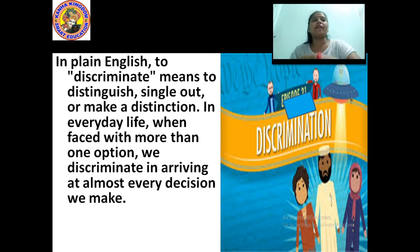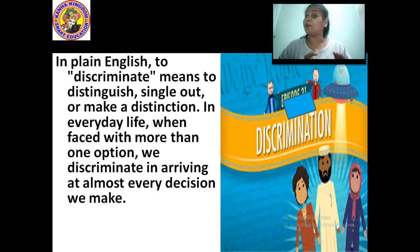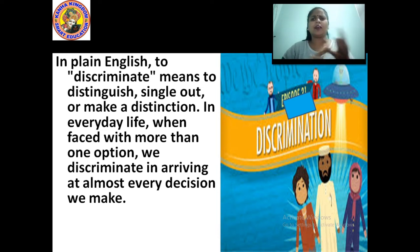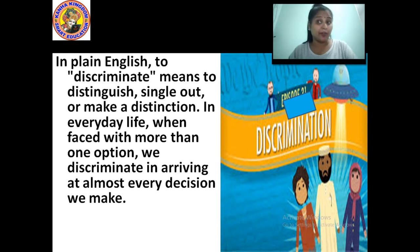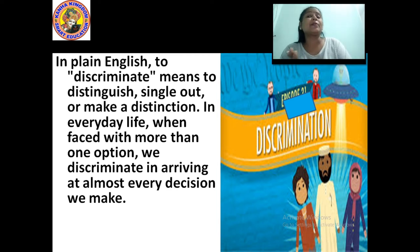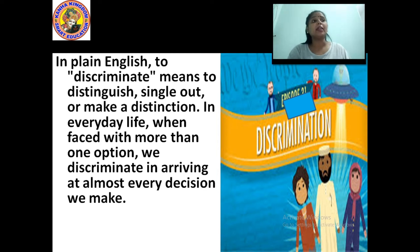In everyday life, when we face more than one option, we discriminate in arriving at almost every decision we make. For example, your mother has made so many dishes in front of you — pizza, burger, and so many varieties — and among that variety there is one mixed vegetable dish that you don't like to eat. So that vegetable is discriminated; you are making it distinct from all other things. In plain English, discriminate means to distinguish one thing from other groups.